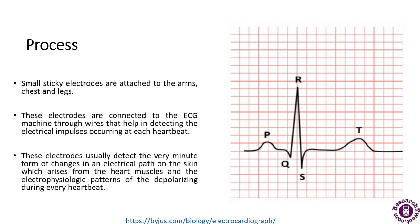The process of electrocardiography includes small sticky electrodes that are attached to the arms, chest, and legs. These electrodes are connected to the ECG machine through wires, which help in detecting the electrical impulse at each heartbeat. These electrodes detect very minute changes in the electrical path on the skin, which arise from the heart muscle and the electrophysiologic patterns of depolarization.